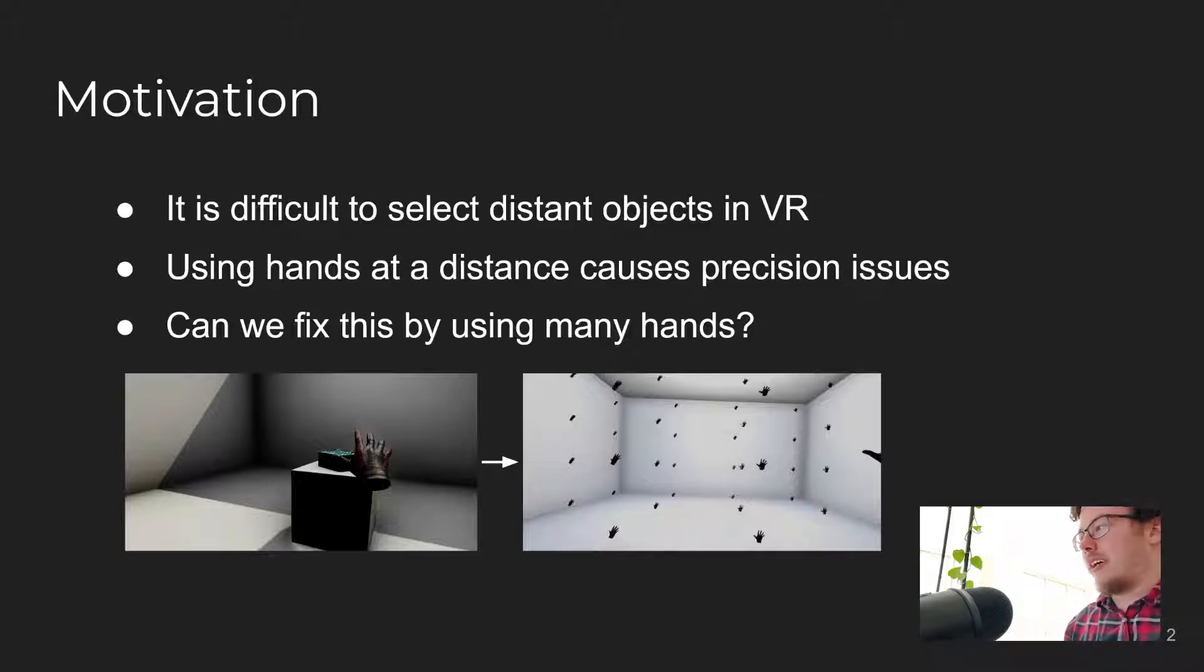One way this has been done is by increasing the movement gain of the virtual hand so that it can reach distant objects, such as with the go-go technique, but then there are issues with precision as you have to map the user's physical reach to a much larger virtual space.